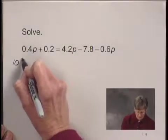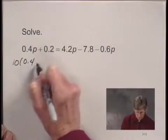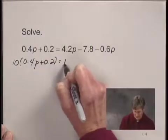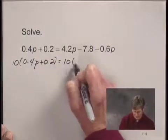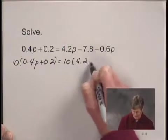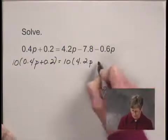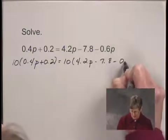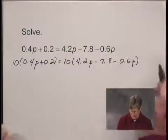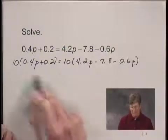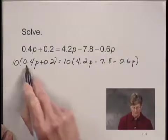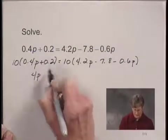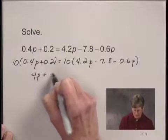We have 10 times 0.4p plus 0.2 on the left hand side, and multiplying by 10 on the right hand side, I have 10 times 4.2p minus 7.8 minus 0.6p. Now using the distributive law, 10 times 0.4p is 4p and 10 times 0.2 is 2.